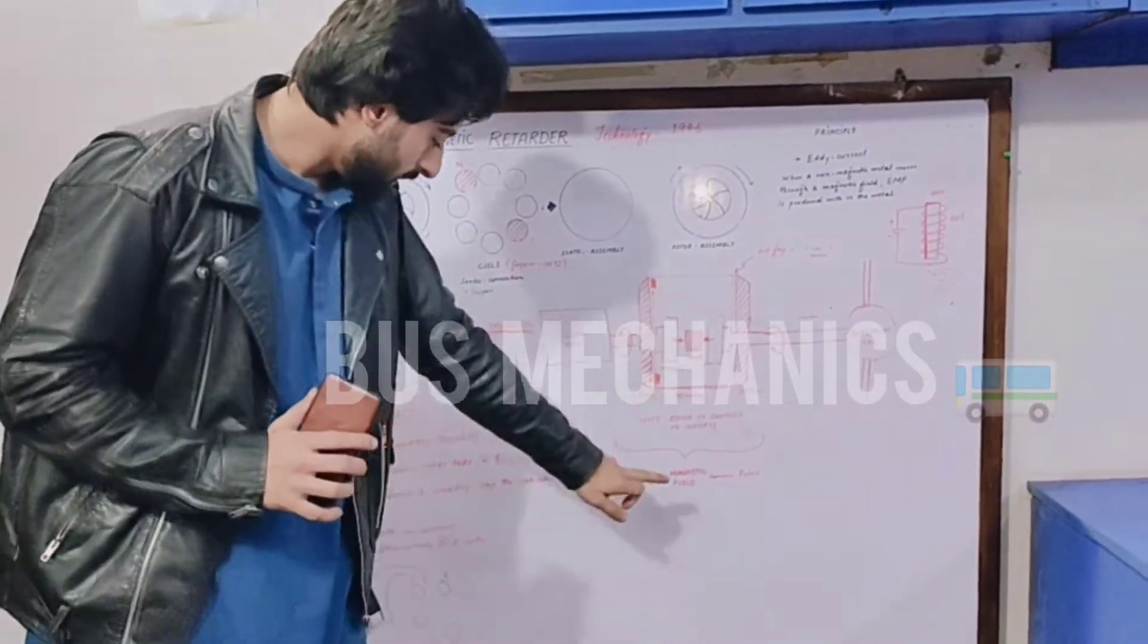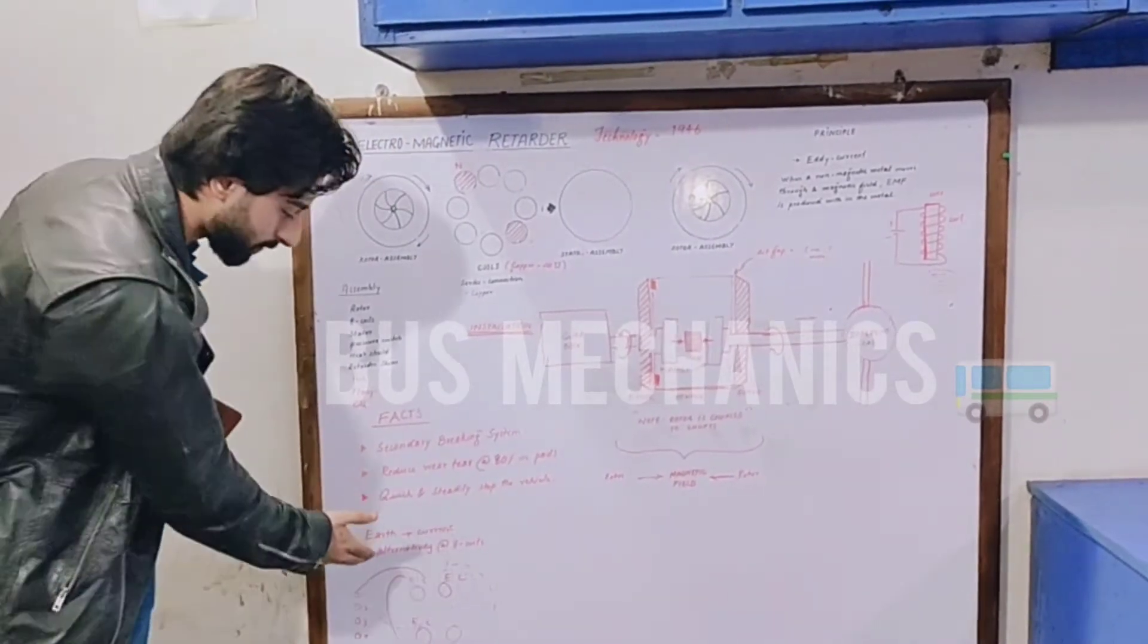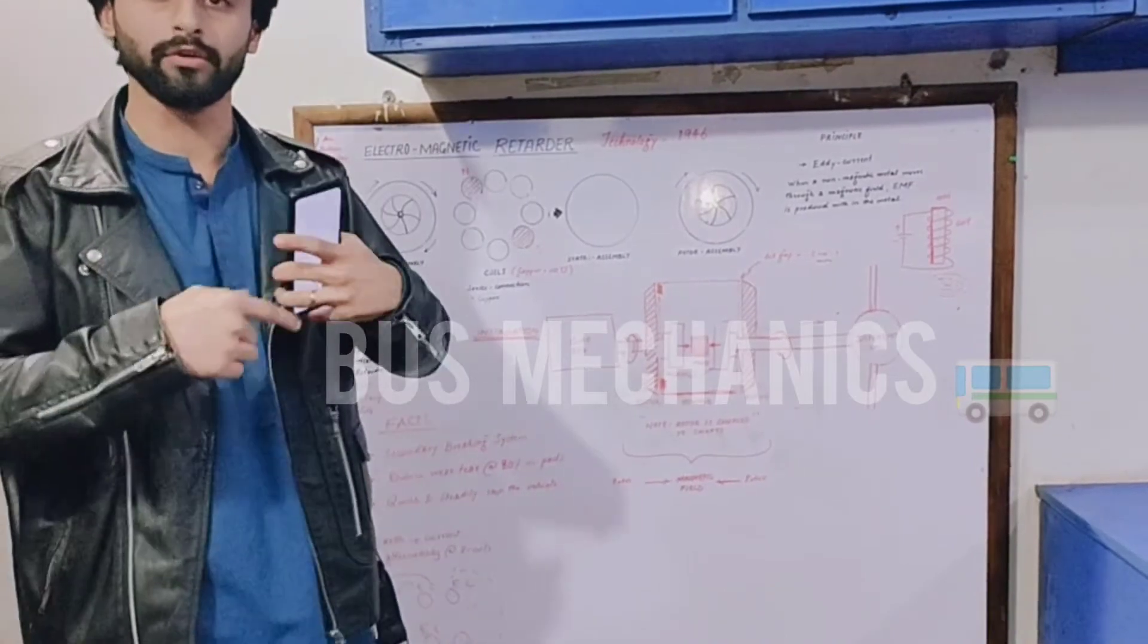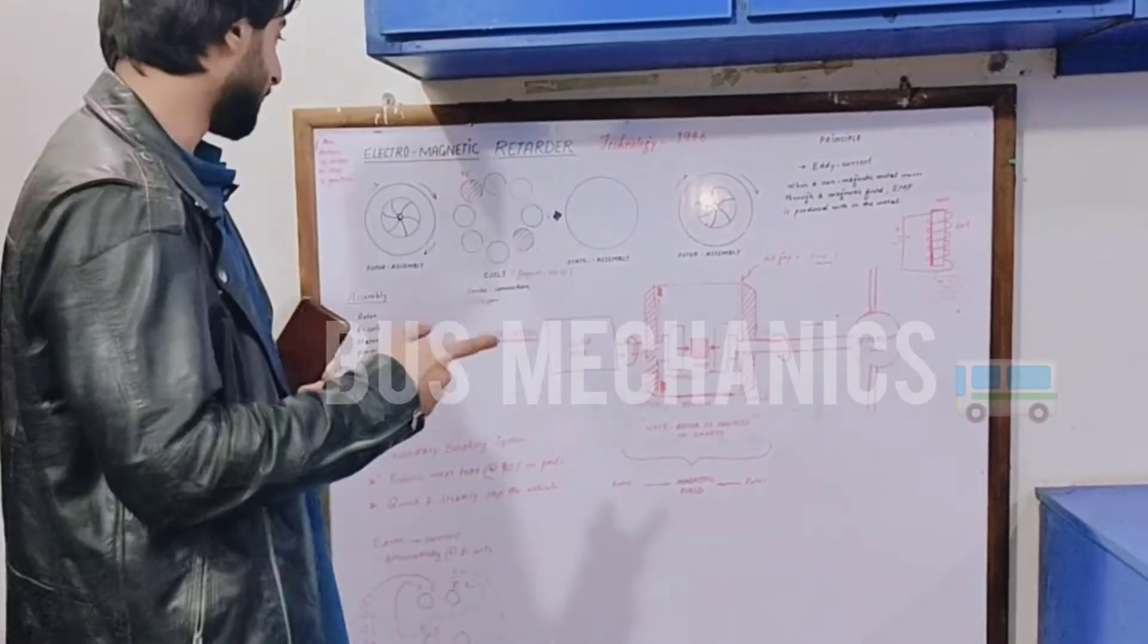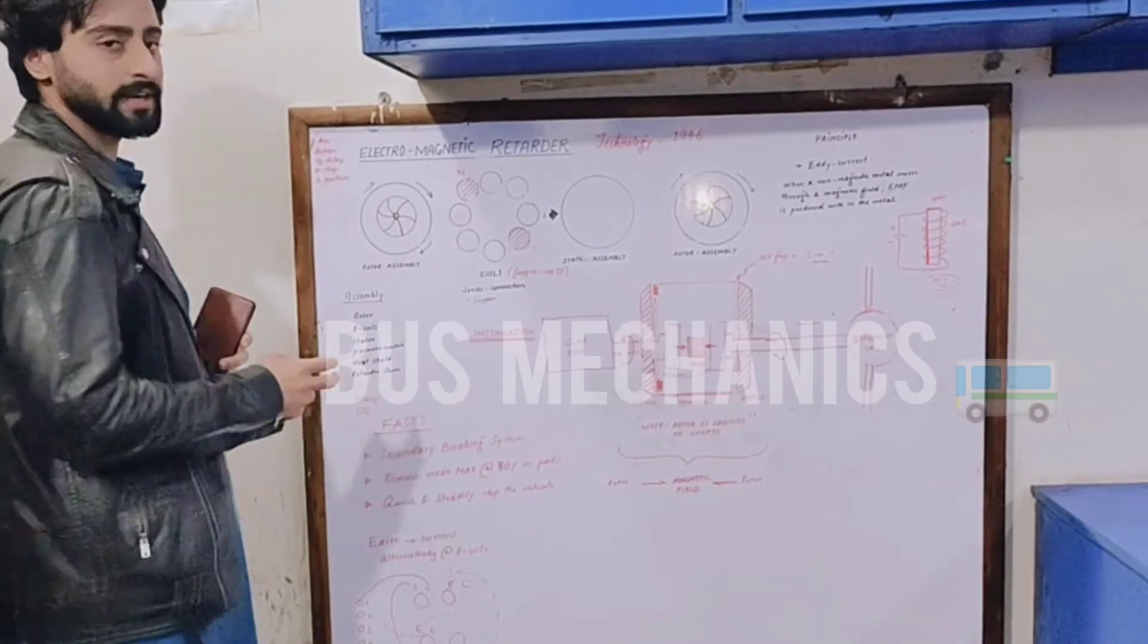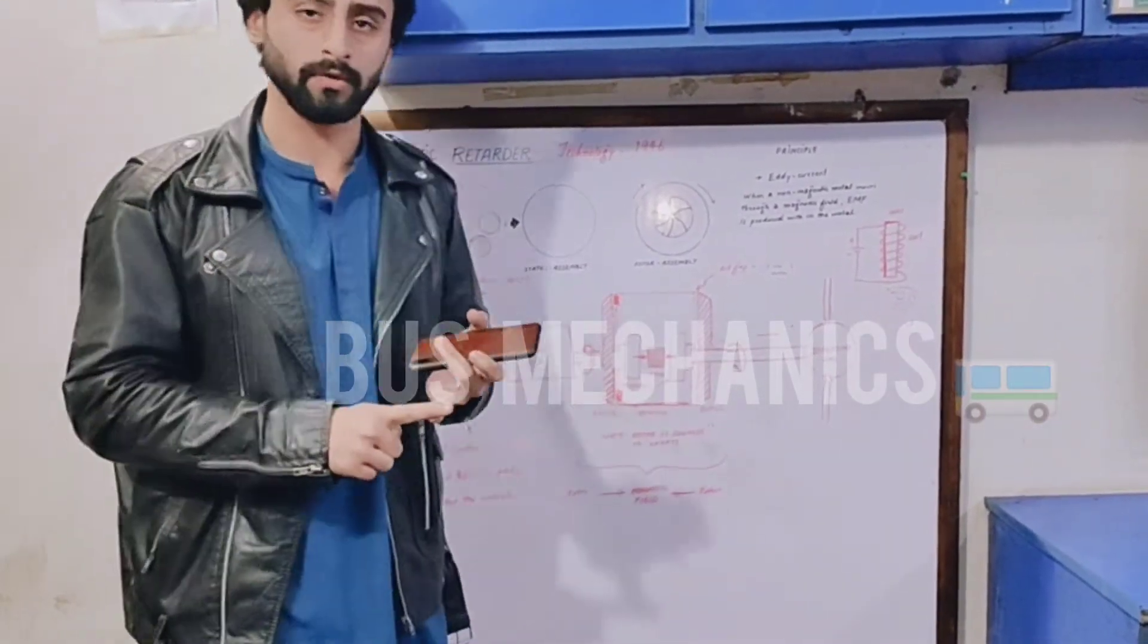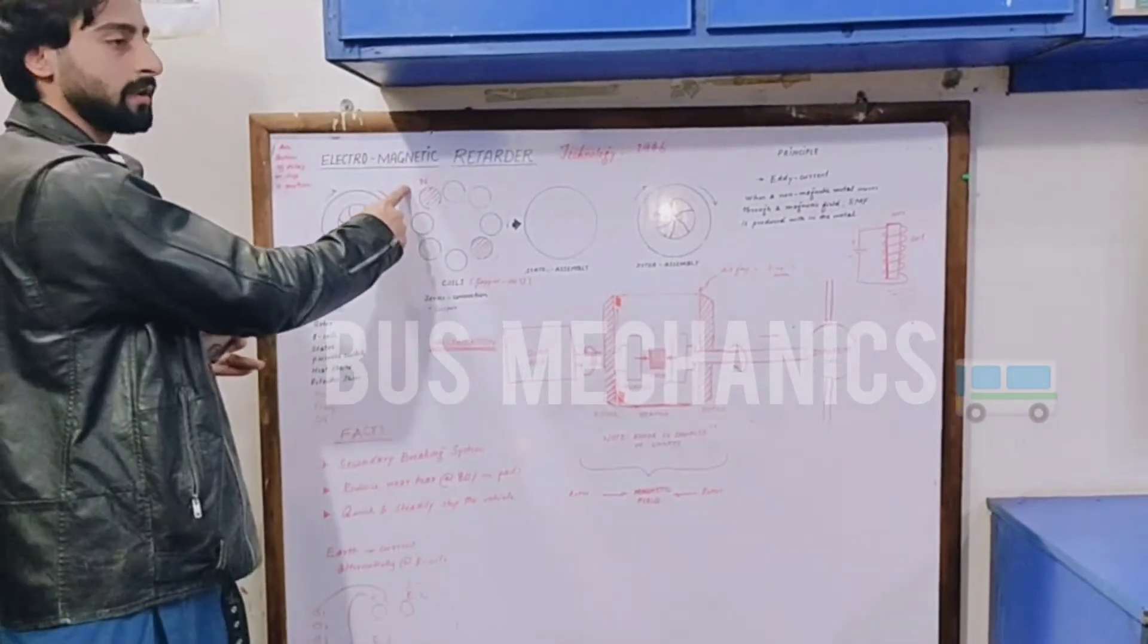Here we will discuss how to connect the coils. This is the main thing about how we are going to operate the retarder with the connection. It is always stated that a coil has two terminals: one is given the current and the other is to the ground.